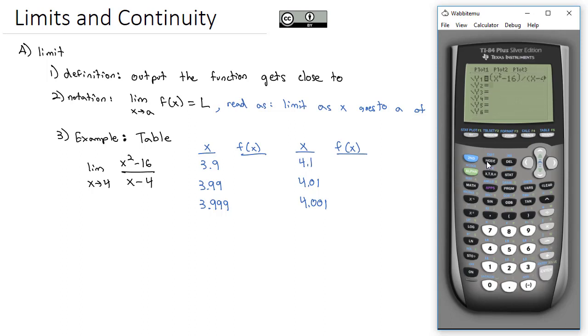We're going to tell the calculator that we want to determine the independent variable, so we're going to hit second and the button for table set. We want to make sure the independent variable says ask. If auto is highlighted, switch it over to ask and hit enter.